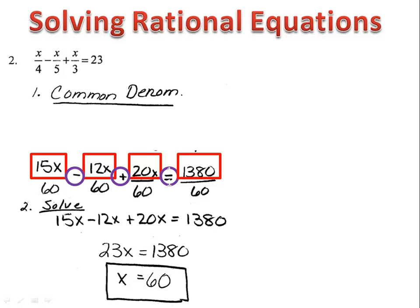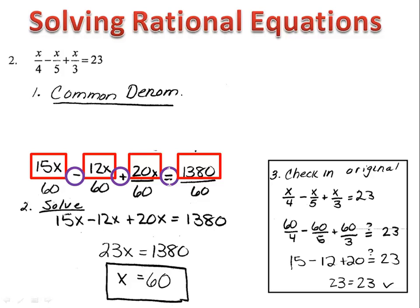We know that this is only a possible solution because we ignored the denominator. We'll then have to do a check whether it be by hand or using the calculator. When we do our check, we find that the solution x equals 60 does work and so x equals 60 is the solution to my equation.